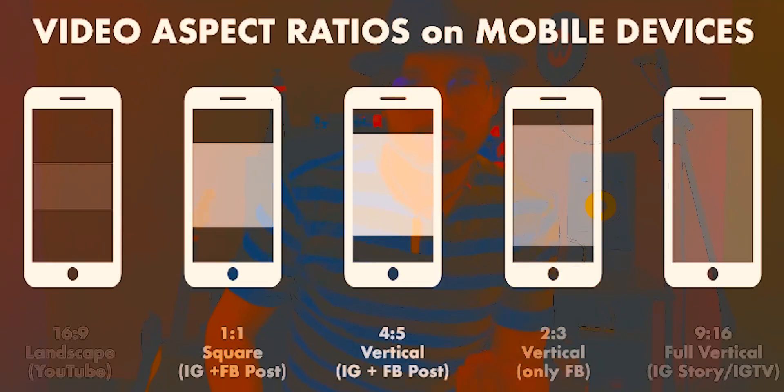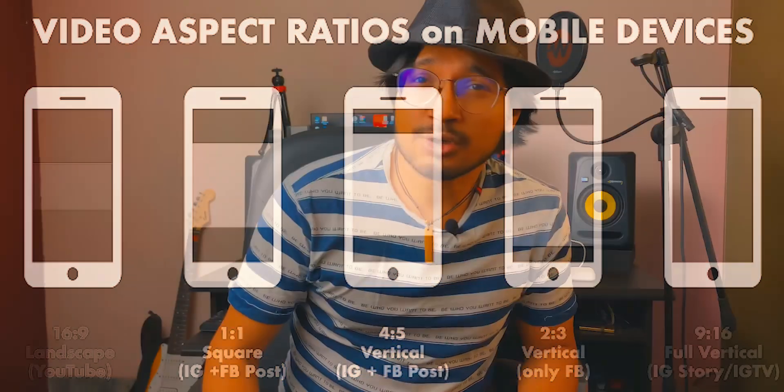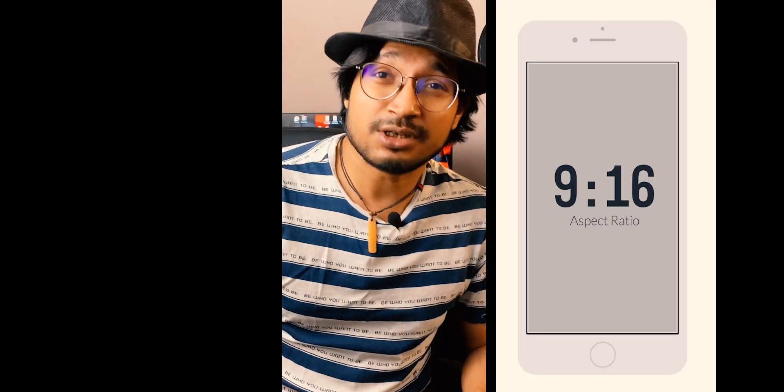When we use Instagram, Facebook, and Twitter, we shoot vertical videos. Vertical videos for TikTok and Instagram Stories use 9 to 16. So 16 to 9 is the widescreen format for YouTube, and 9 to 16 is the long vertical format used for IGTV and Facebook video as well.